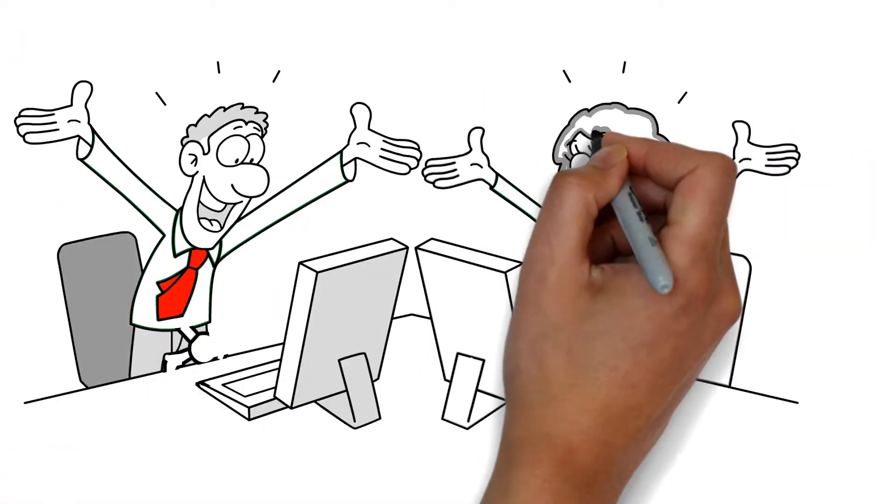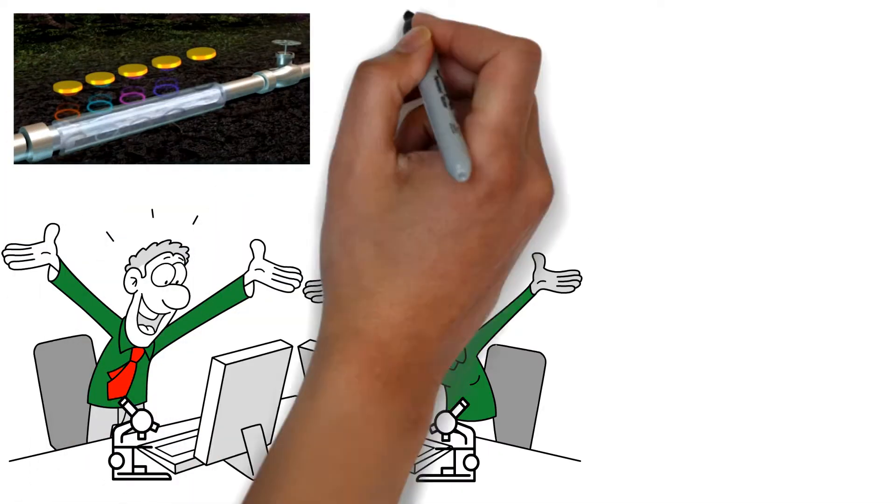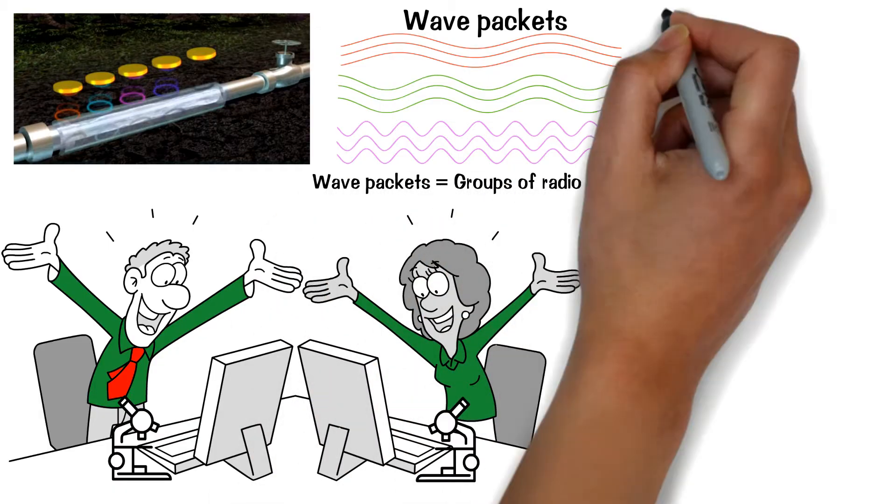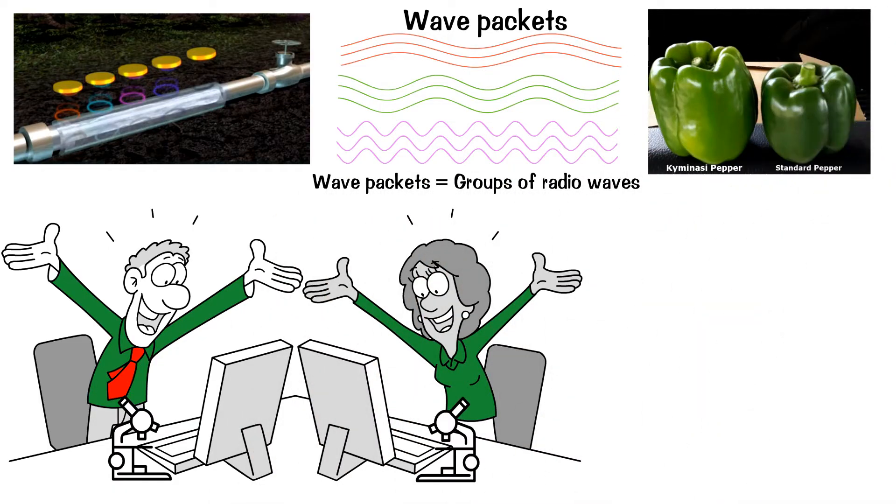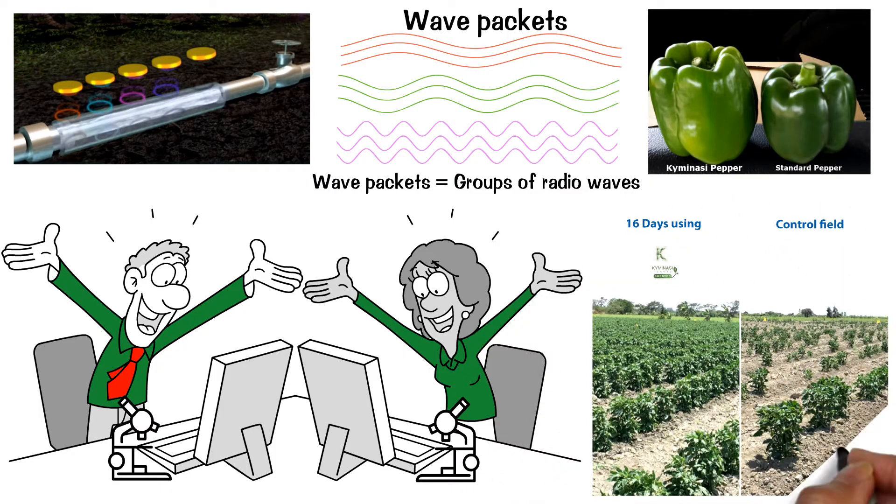After decades of research, a microtransmitter system has been developed that stores specific algorithms made up of wave packets which correspond to the actual different biophysical signals capable of promoting the vital processes of living things in a completely natural and non-invasive way. This ultimately stimulates nutrient absorption and fruit production in plants.